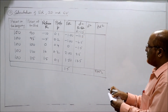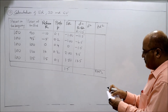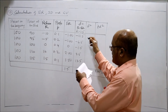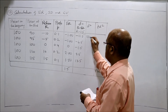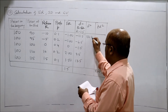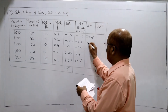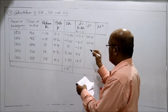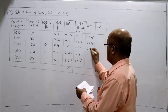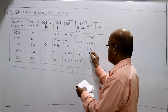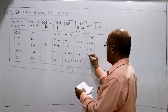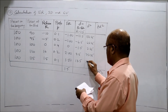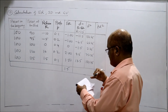So the deviations are: minus 11.5, minus 6.5, minus 1.5, 8.5, and 13.5. Squaring these gives 132.5, then 42.5, 2.5, 72.5, and 182.5.